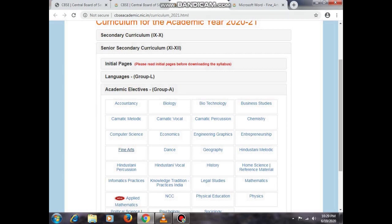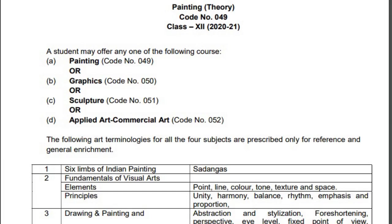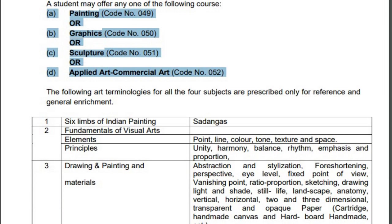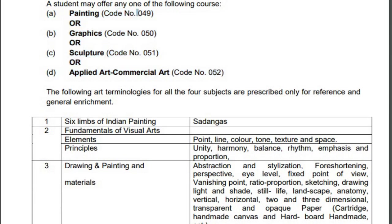As you are looking on the screen, Fine Arts has four streams under it, for both 11th and 12th. The four streams are: Painting, Graphics, Sculpture, and Applied Arts, with their respective codes — Painting is 049, Graphics is 050, Sculpture is 051, and Applied Art or Commercial Art is 052.